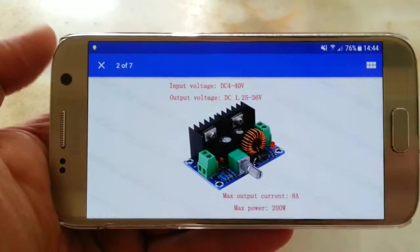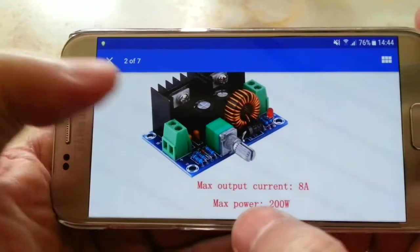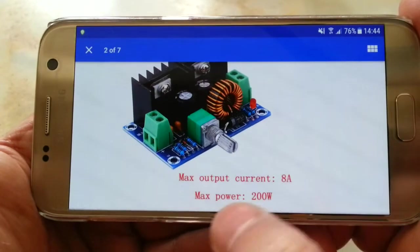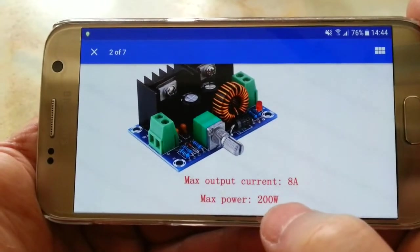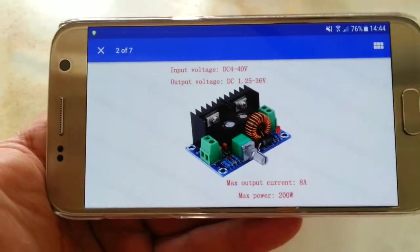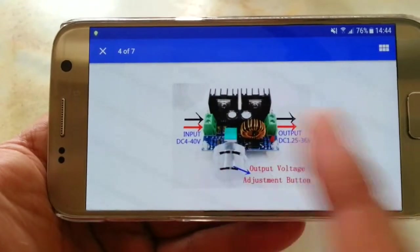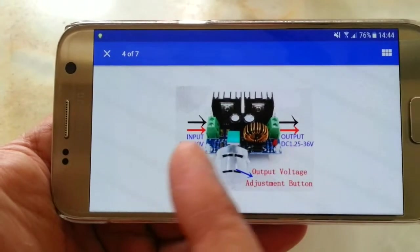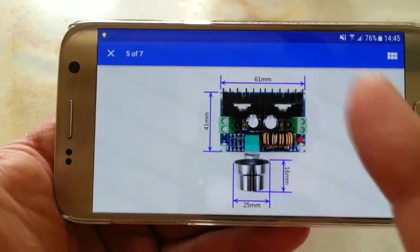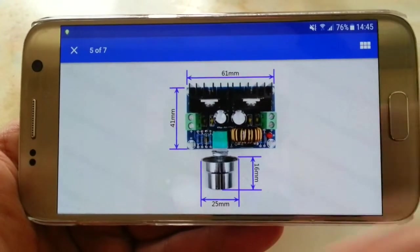The specifications are: input is 4 to 40 volts DC and the output is 1.25 to 36 volts DC. What is very unique about this is the output. It says the max current is 8 amp and max power is 200 watts. I don't know if you want to believe this, but it's really hard to believe.